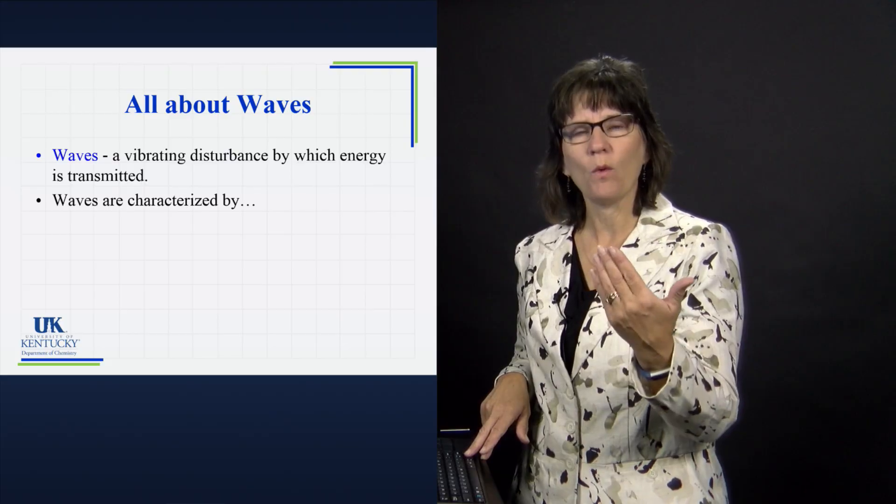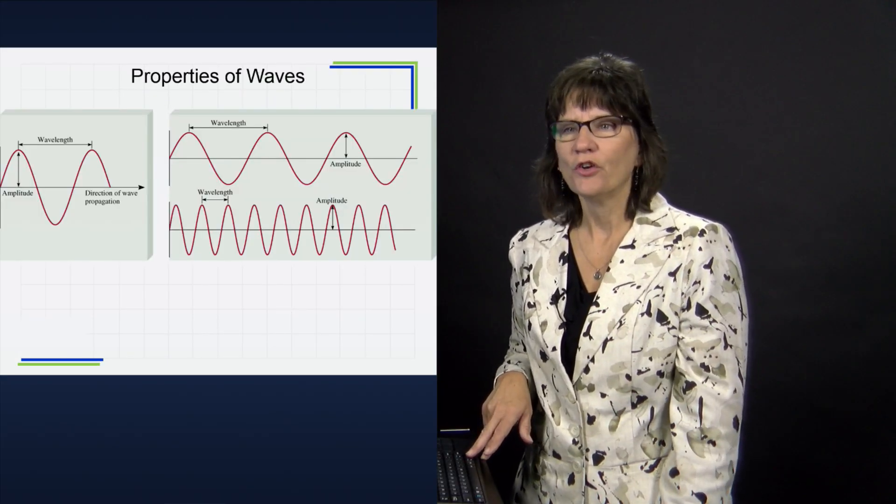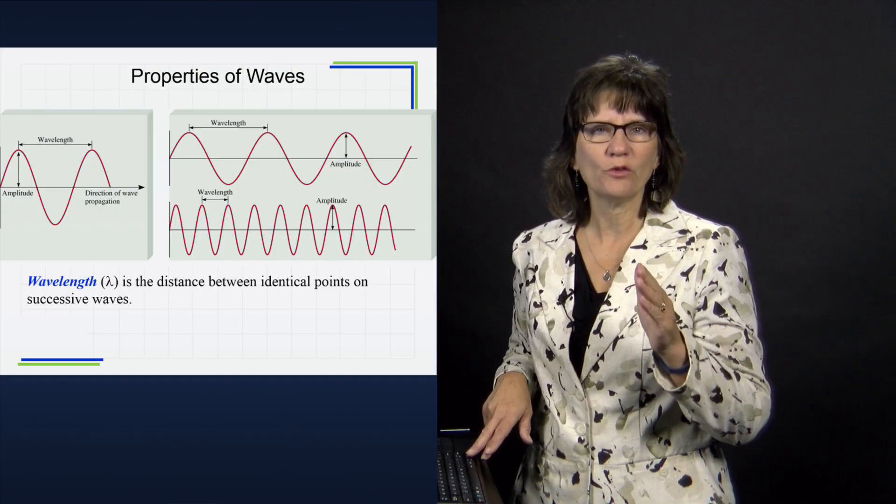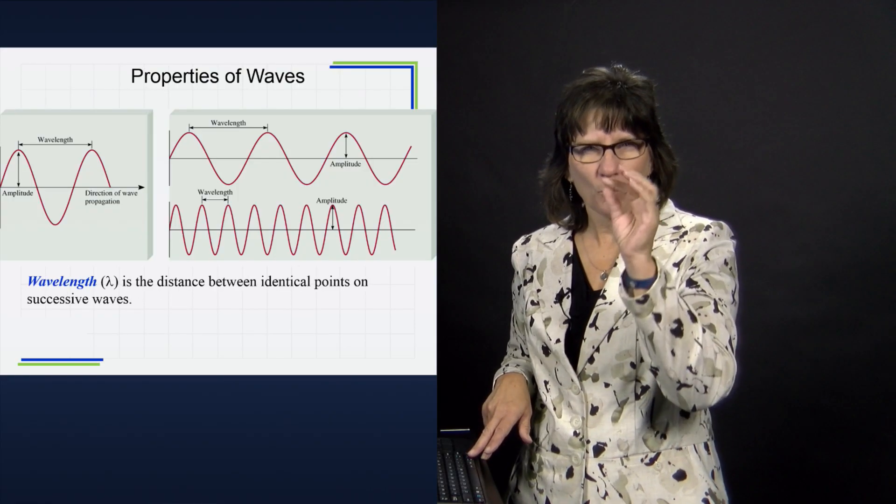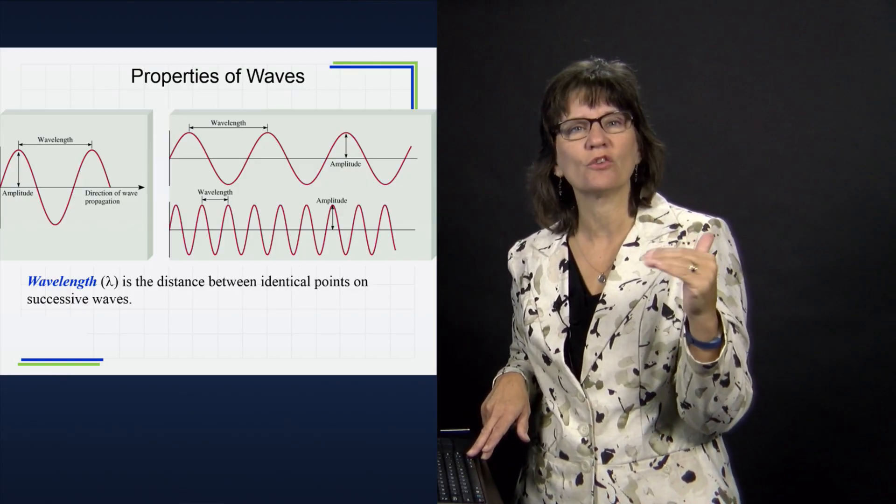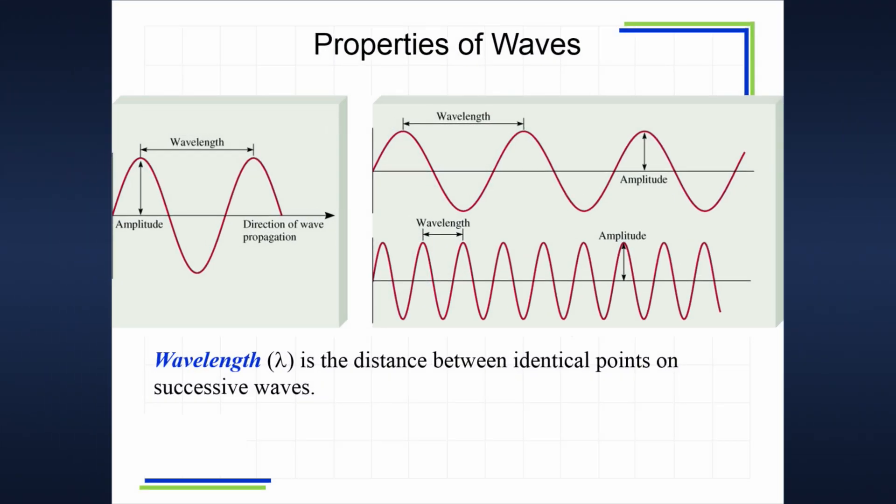When we talk about waves, there are certain characteristics we need to understand. The first property is wavelength. What is a wavelength? It's the distance from one peak to the next peak on successive waves. We see various different wavelengths on the screen - the wavelength is from peak to peak.